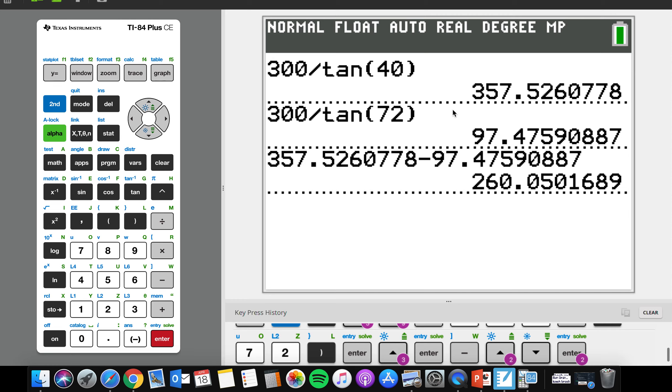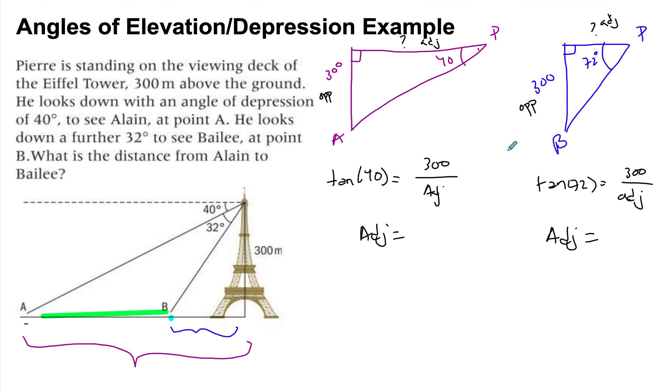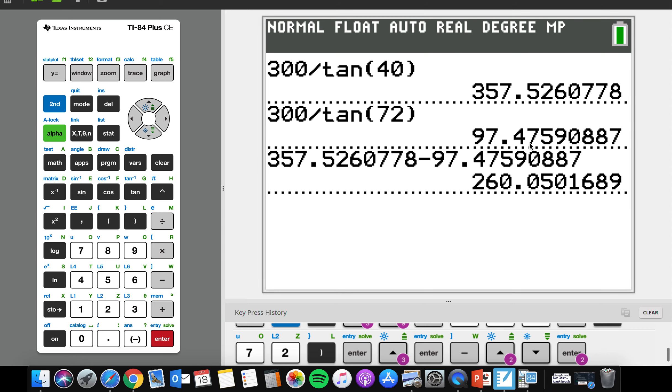And then you could do the calculations. So the adjacent here and the adjacent here. I've done the calculations already. So the adjacent for the first one is 357.526. Just leaving it to as many decimal places because you're not done.